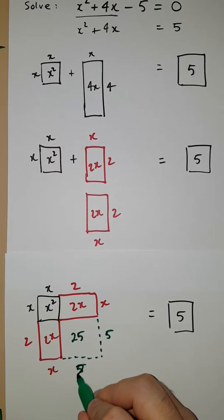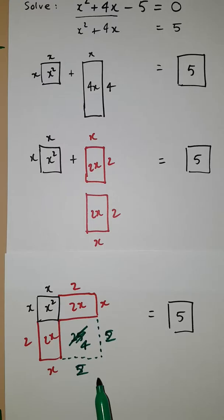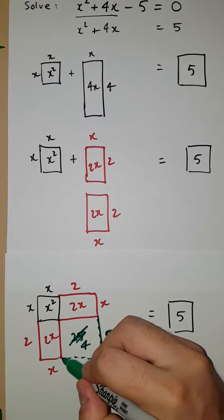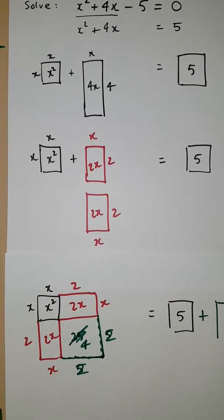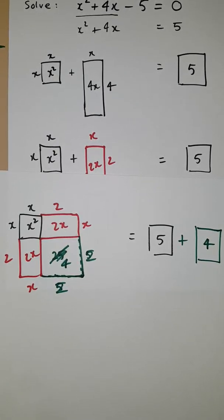Sorry, I've used the wrong numbers, 2 and 2 for an area of 4. So what we need to do is, of course, if we're going to add that square to this side, we need to do the same thing over this side. Okay, so we've got this situation now.